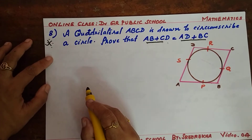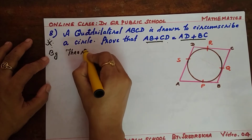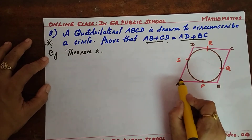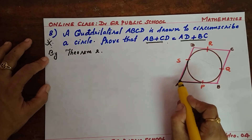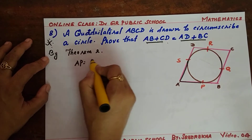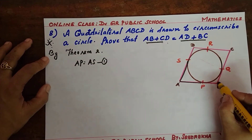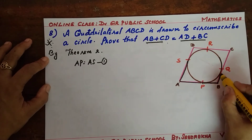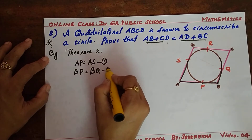To prove this result, I am going to apply Theorem 2. By Theorem 2, tangents from an external point to the circle are equal. So from external point A: AP equals AS — equation 1. From external point B: BP equals BQ — equation 2.